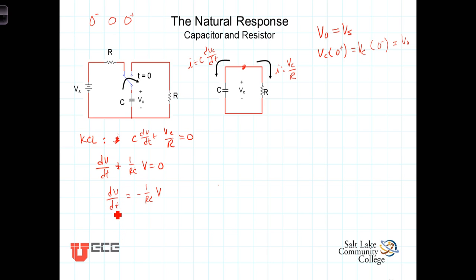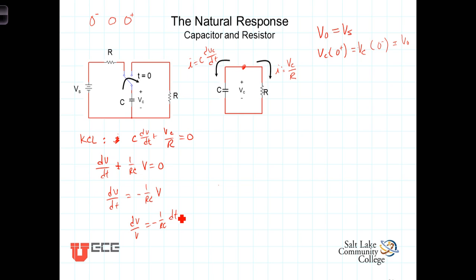Let's go ahead and solve this for V as a function of time. We'll multiply both sides of the equation by dt and divide both sides by V, so that we end up with dV over V equals negative 1 over RC times dt. You see the separation here — we now have all the voltage terms on the left and the time term dt on the right. And now we integrate.